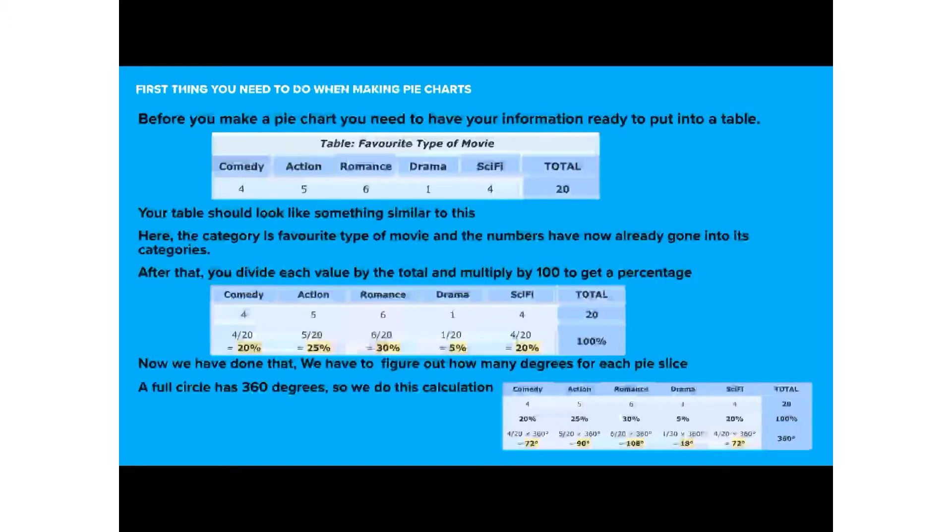Before you make your pie chart, you need to have your information ready to put into a table. This table I got from Math is Fun, and it should look like this. The category is favorite type of movie, and numbers have now already gone into its categories. After that, you divide each value by the total and multiply by 100 to get a percentage. Now we have to figure out how many degrees for each pie slice. A full circle has 360 degrees, so we have to do this calculation.